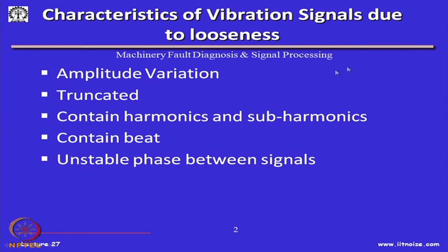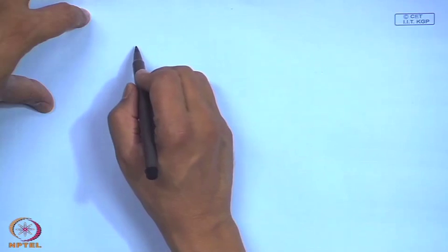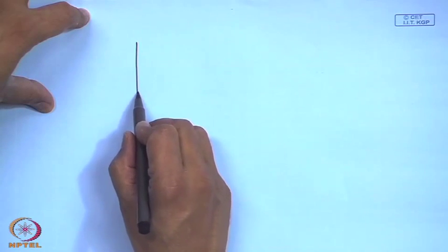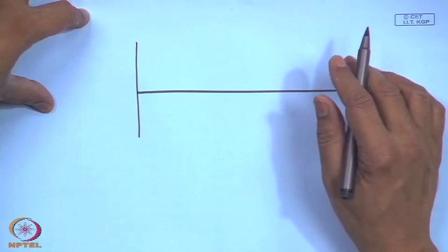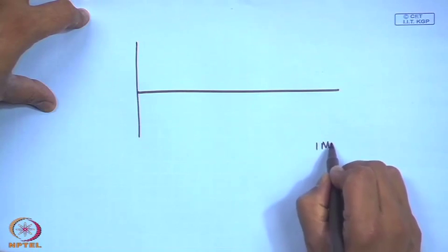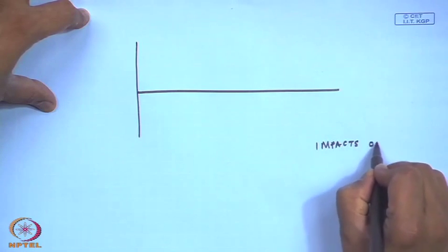The characteristics of vibration signals due to looseness include: significant amplitude variation, signals in the time domain that look truncated, harmonics and sub-harmonics, beating of signals, and unstable phase between signals. When things are loose, components fly around and hit against each other, producing a series of impacts.